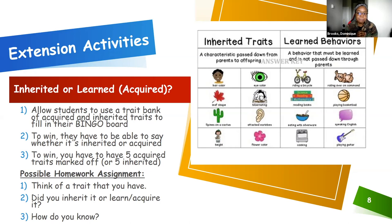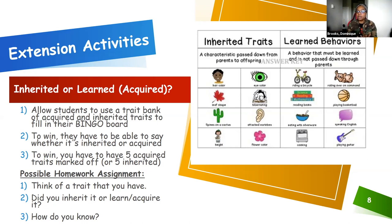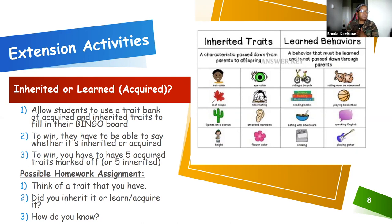Another version: students mark off five squares anywhere on the board, but they all have to be in the same category — all inherited or all learned. Whether in a row, four corners plus center, or scattered, getting five in the same category counts as bingo, but they have to prove it. Another potential extension — possibly a homework assignment — is having students pick a trait they have, maybe something they're proud of or that feels unique to them, research whether it was inherited or learned, and explain how they know.